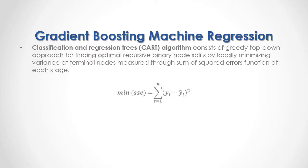As a formula, we have the minimization of sum-of-squared-errors equal to the sum from the first to the last of the difference between output target feature data minus the terminal node output target feature mean, that result squared. Terminal node output target feature mean is equal to 1 divided by m — where m is the number of observations in the terminal node — multiplied by the sum from the first to the last of the output target feature data.